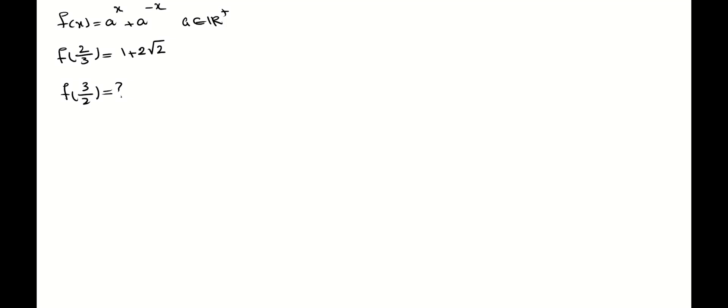Hello everyone, welcome to the SQRT channel. In this video we are going to talk about a problem that deals with a functional equation. Here we have f(x) defined as a^x + a^(−x), where a belongs to the positive real numbers. We have f(2/3) defined as 1 + 2√2, and we need to find f(3/2).